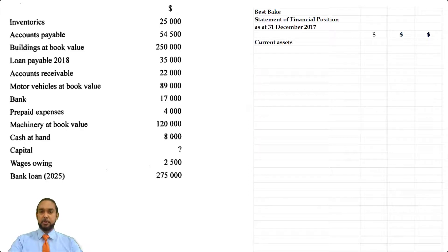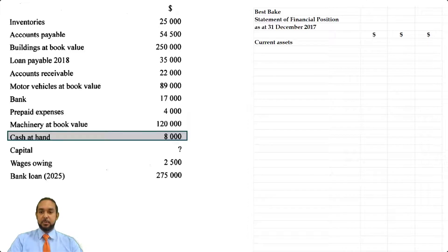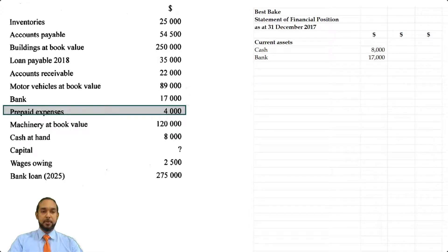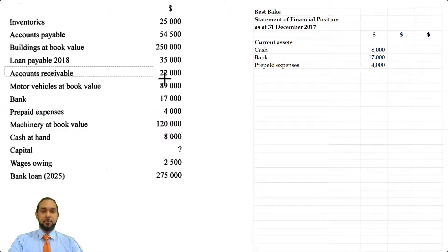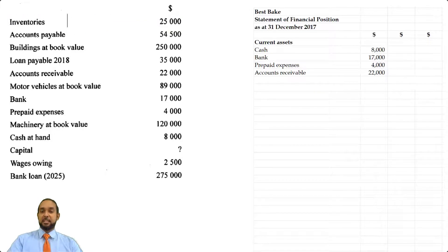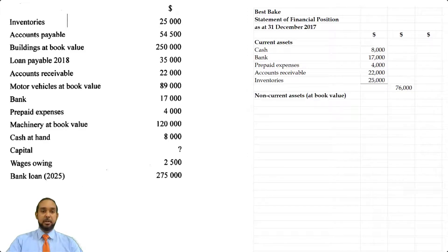Let's pull up first our current assets. Like we said, the first current asset is going to be cash in hand — that's $8,000. Next, we're going to put in the bank figure, which is $17,000. I believe we also have some prepaid expenses right below the bank figure of $4,000. Then we have accounts receivable. We don't have any provision for bad debts, so we're just going to plug in the $22,000 for accounts receivable. And of course, finish off with inventories as it's the least liquid or most permanent current asset.